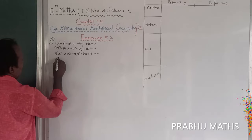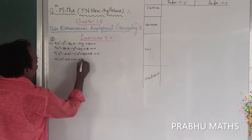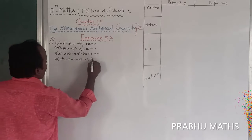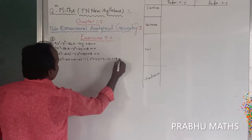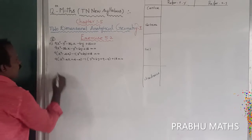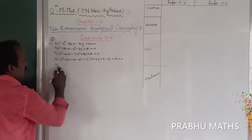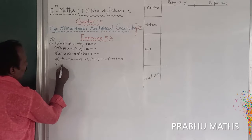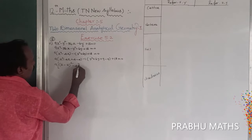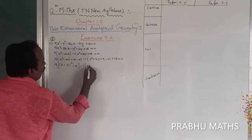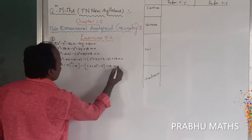So: y² plus 6y plus 18 equals 0. Next, 9 into (x² minus 4x) minus 1 into (y² plus 6y) plus 18 equals 0. To complete the square, we take 9 into (x minus 2)² — the half of 4 is 2.